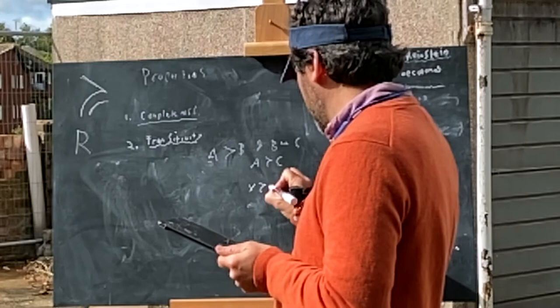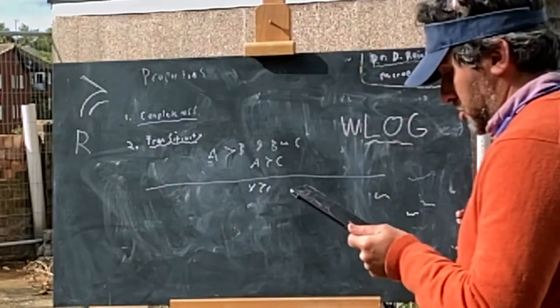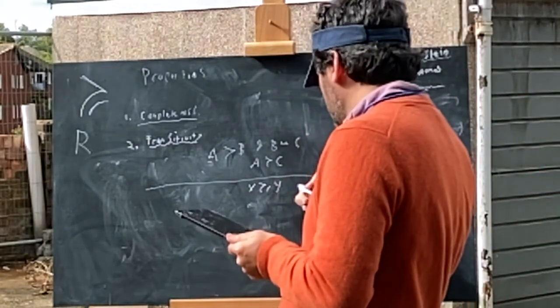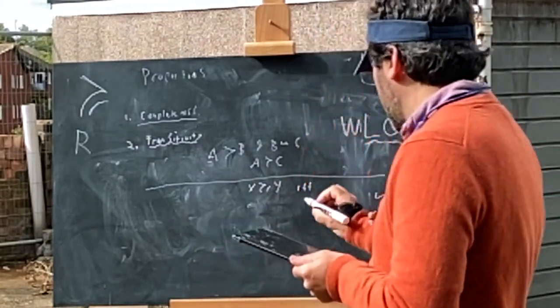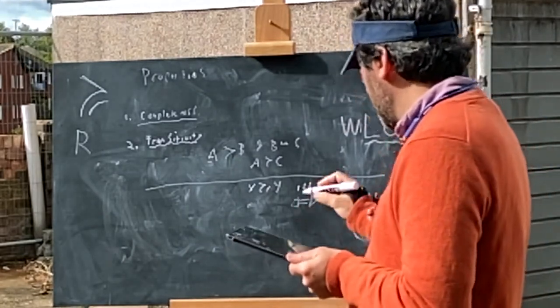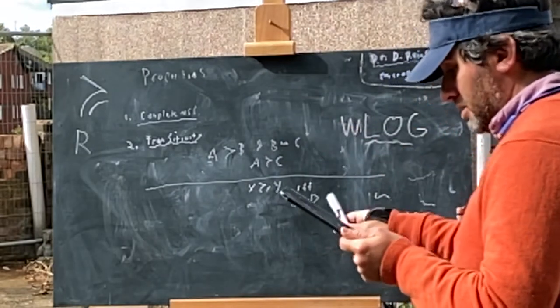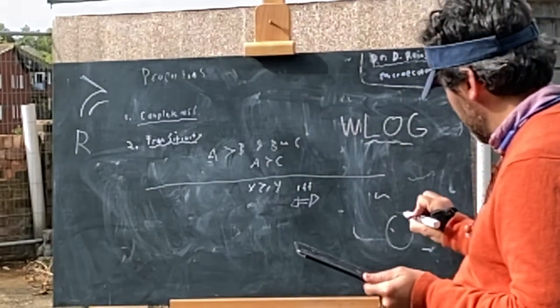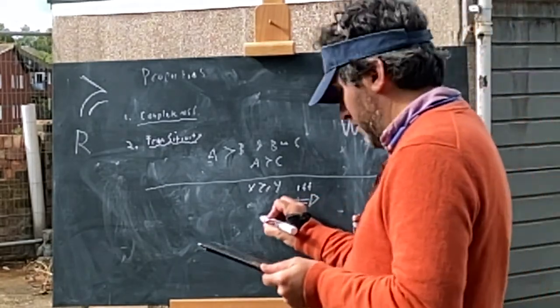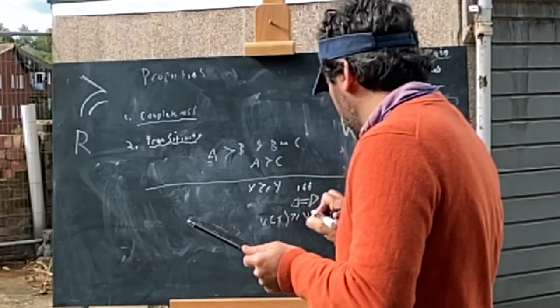I just said this a moment ago, but if preferences are characterized by value functions, we have x preferred to y if and only if - and the arrow in both directions means equivalent, this implies this and vice versa. In set theory, these would be the exact same sets of things - if and only if v(x) greater than or equal to v(y).